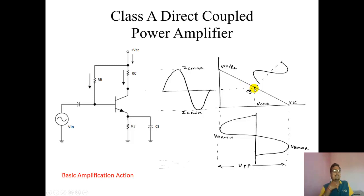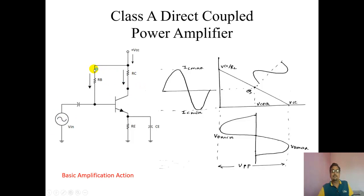The Q point is exactly at the center. What is the Q point? Q point means the minimum voltage and current available at the output of an amplifier without connecting an input signal. Even if you don't apply an input signal, ICQ current and VCQ voltage are available at the output — just because of the biasing we have provided. That current and voltage we refer to as ICQ and VCQ, which we call the operating point, biasing point, or Q point.